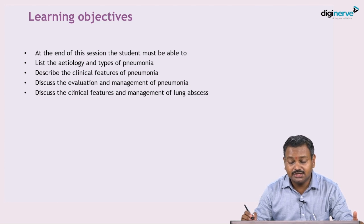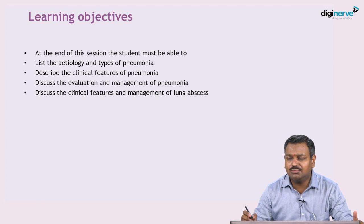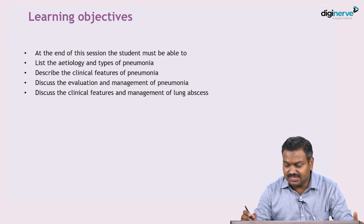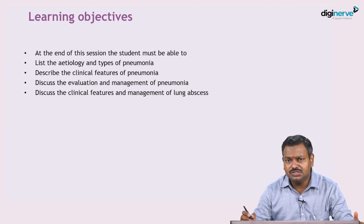Pneumonia is a very common disease — it is the sixth leading cause of death worldwide, especially in developed nations. Age is a very important risk factor, and one of the important causes of morbidity and mortality in the elderly is secondary to pneumonia. As William Osler had said, 'Pneumonia is a friend of the aged,' and the majority of elderly people do die due to pneumonia.